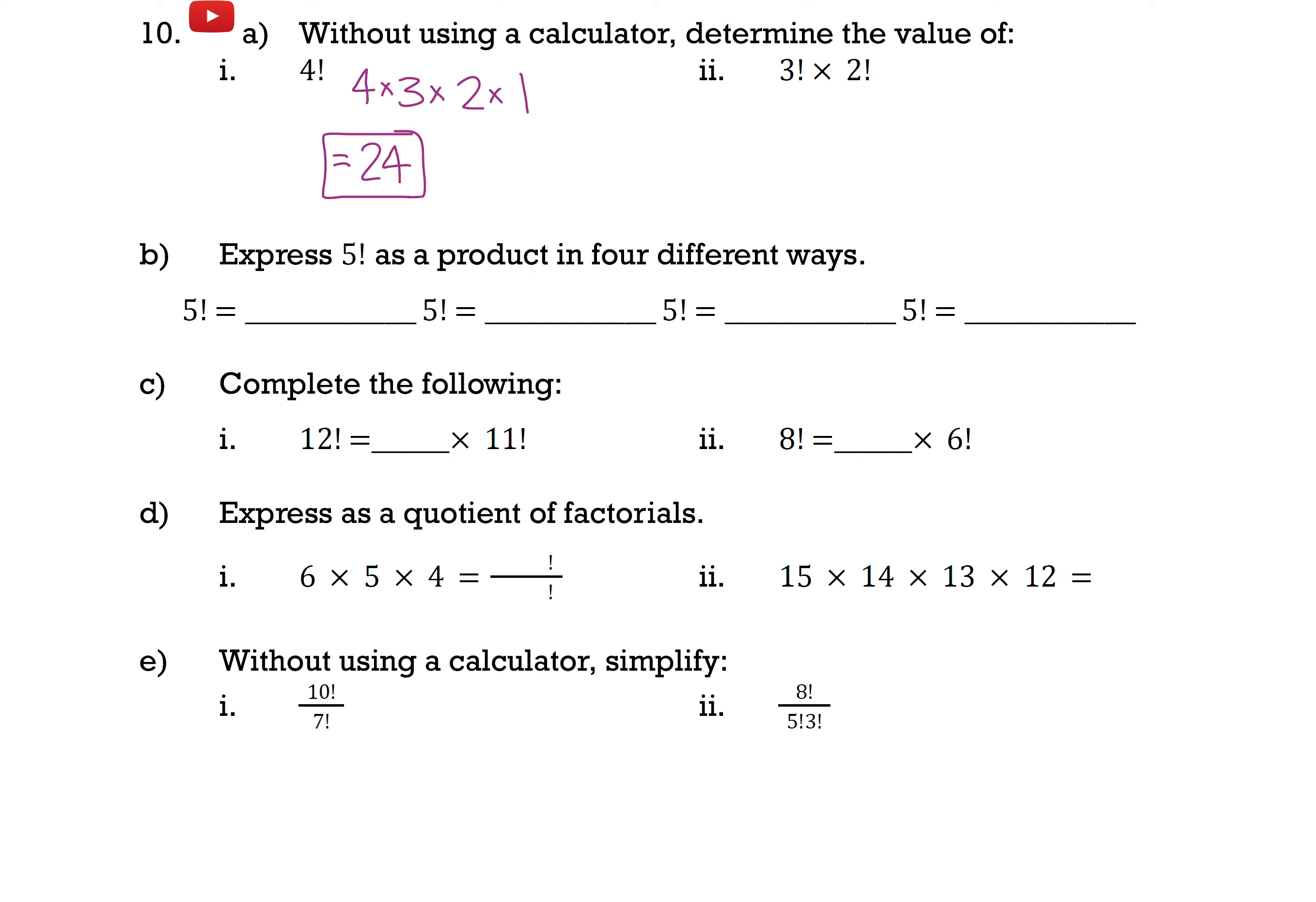Now for part 2, we have 3 factorial times 2 factorial. So 3 factorial is 3 times 2 times 1, and we're multiplying that by 2 factorial, which is 2 times 1. Remember that multiplying by 1 doesn't actually do anything to our product, so I can safely ignore them. So I have 3 times 2, which is 6, and 6 times 2, which is 12.